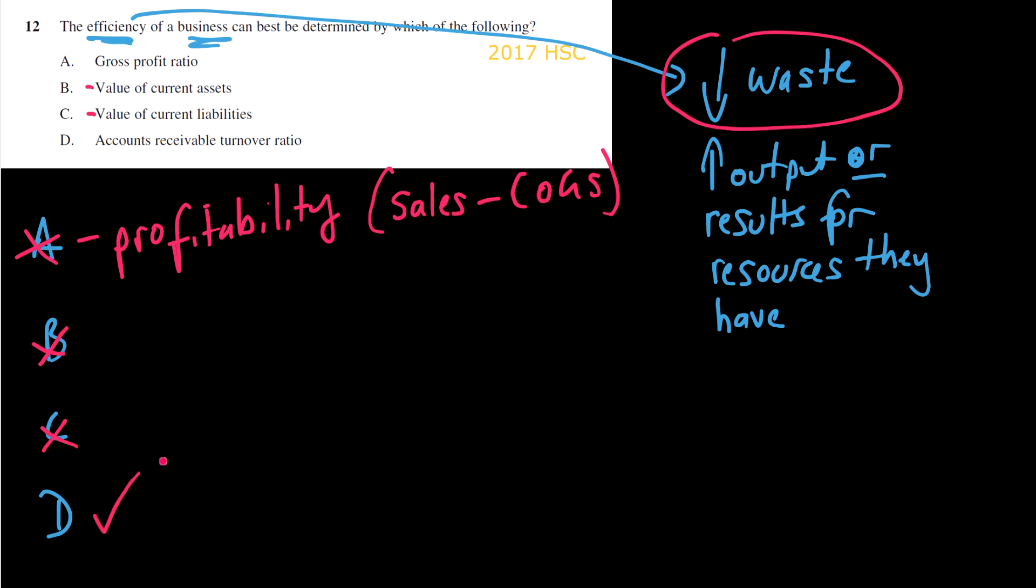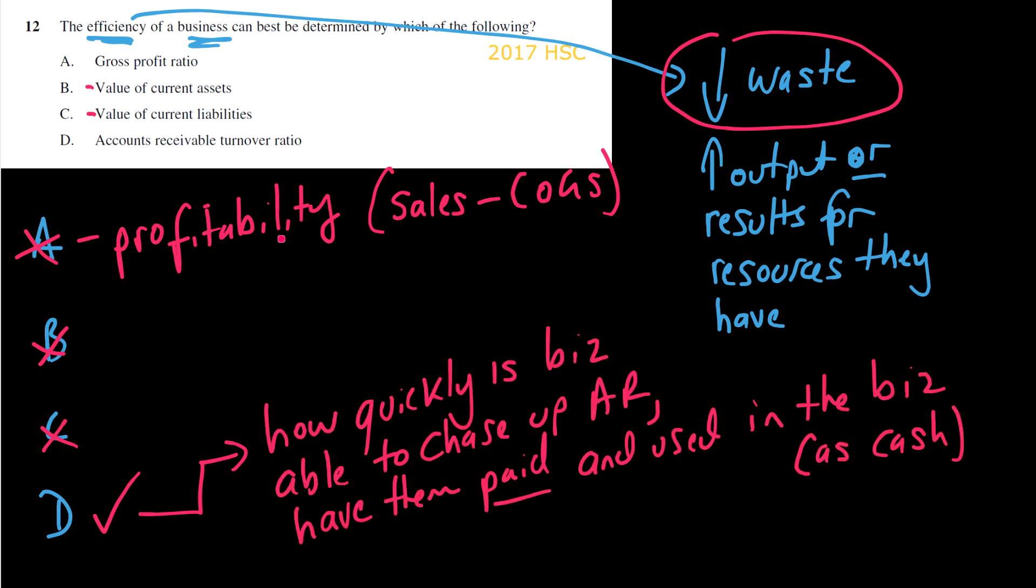But what we can do is just for our purpose, we can say, well, how is this showing efficiency? And what it really is talking about is we are saying, the reason why the accounts receivable turnover ratio is a measure of efficiency is it's saying how efficient is the business at chasing up the money it's owed? How quickly can the business chase up accounts receivable, have those accounts receivable paid, and then have that money used in the business as cash? So that is the best measure of efficiency in this context.